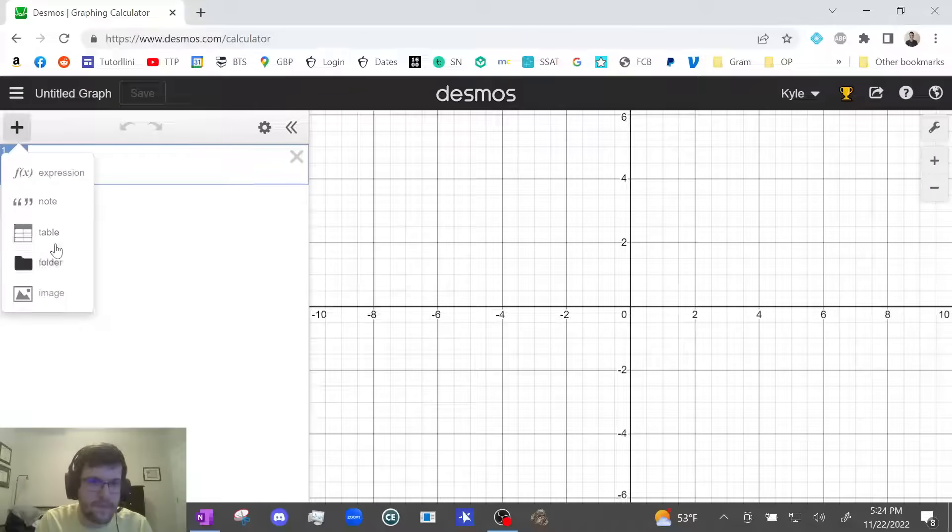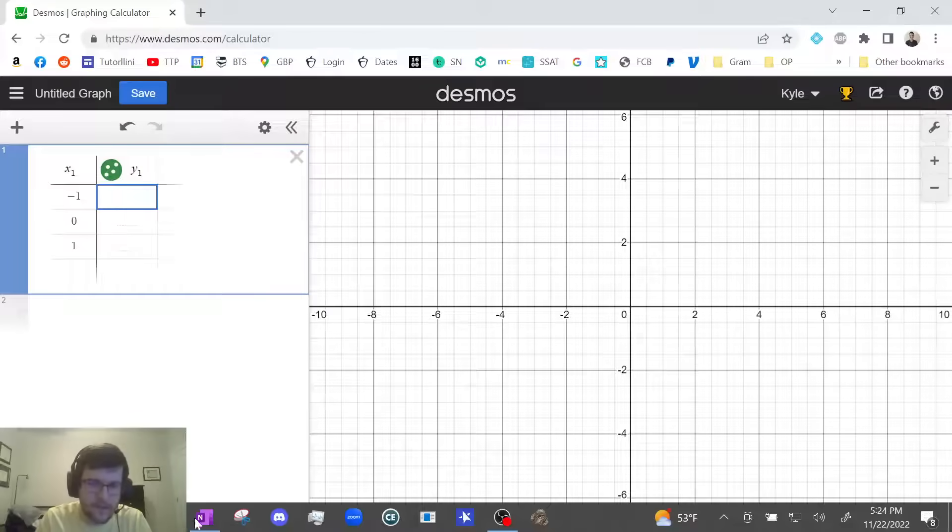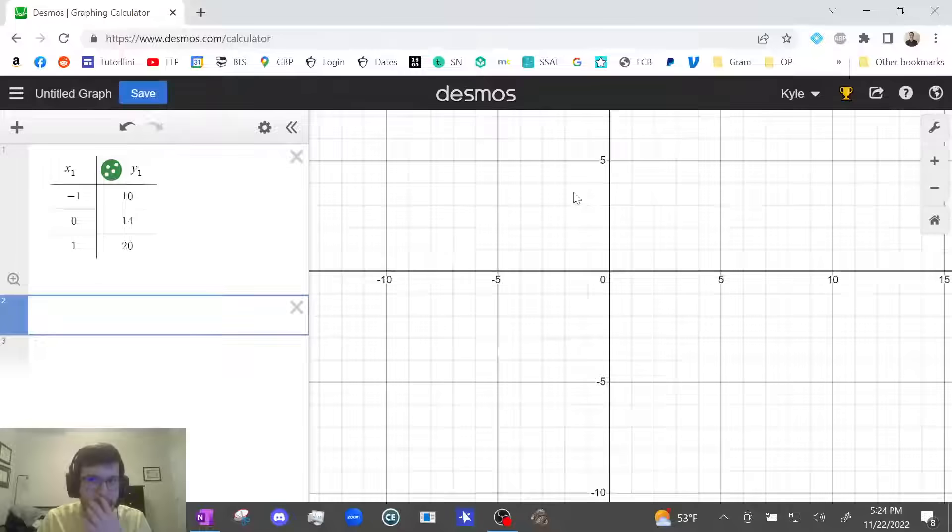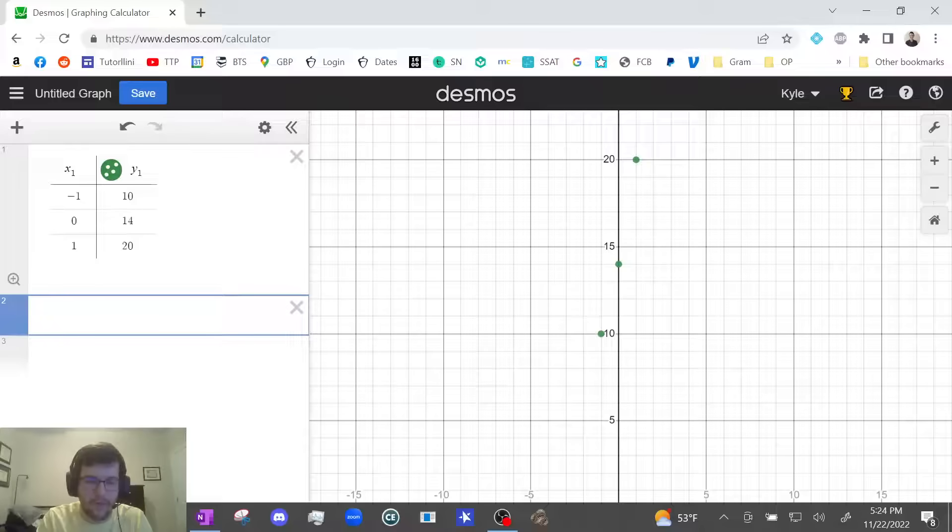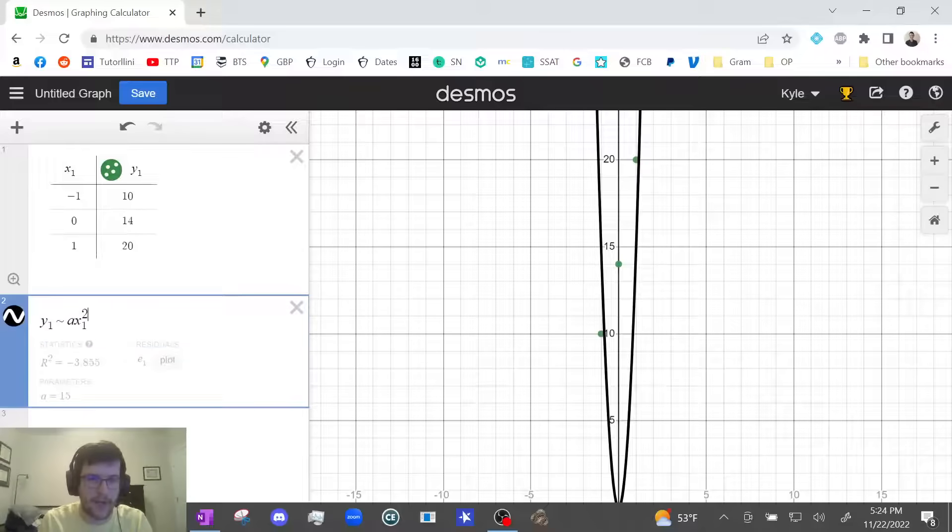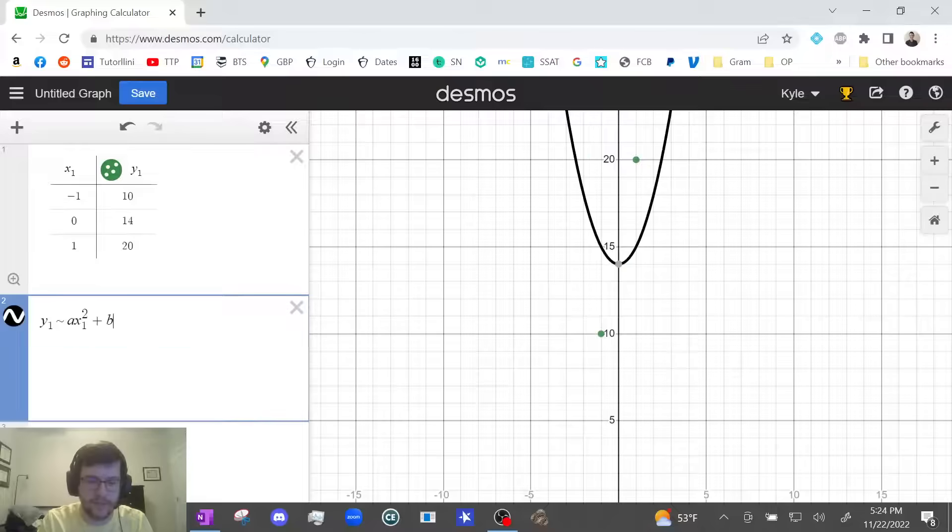So let's make a new table. And I believe it's negative 1, 0, 1. And then 10, 14, 20. And this one is a quadratic. So let me see the points. Yep, they're right there. So we're going to type in y1—again you always got to put 1 after the variables when you're regressing—tilde, and then ax squared plus bx plus c. But just make sure you're putting x1 instead of x. So ax1 squared, right arrow key, plus bx1.